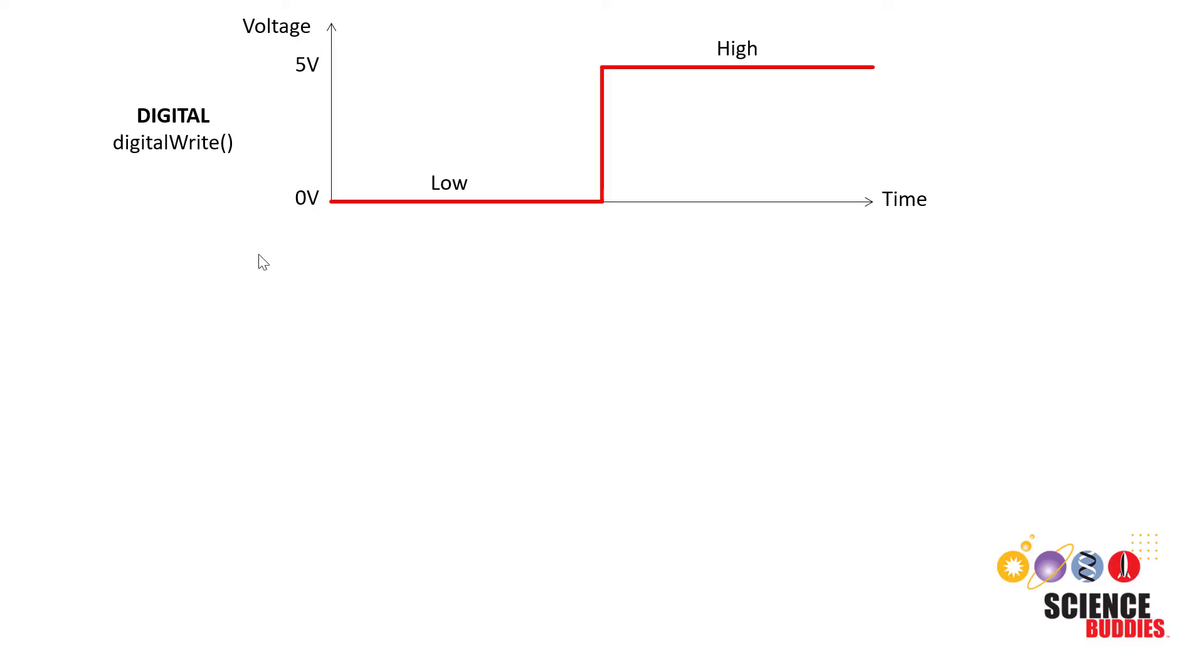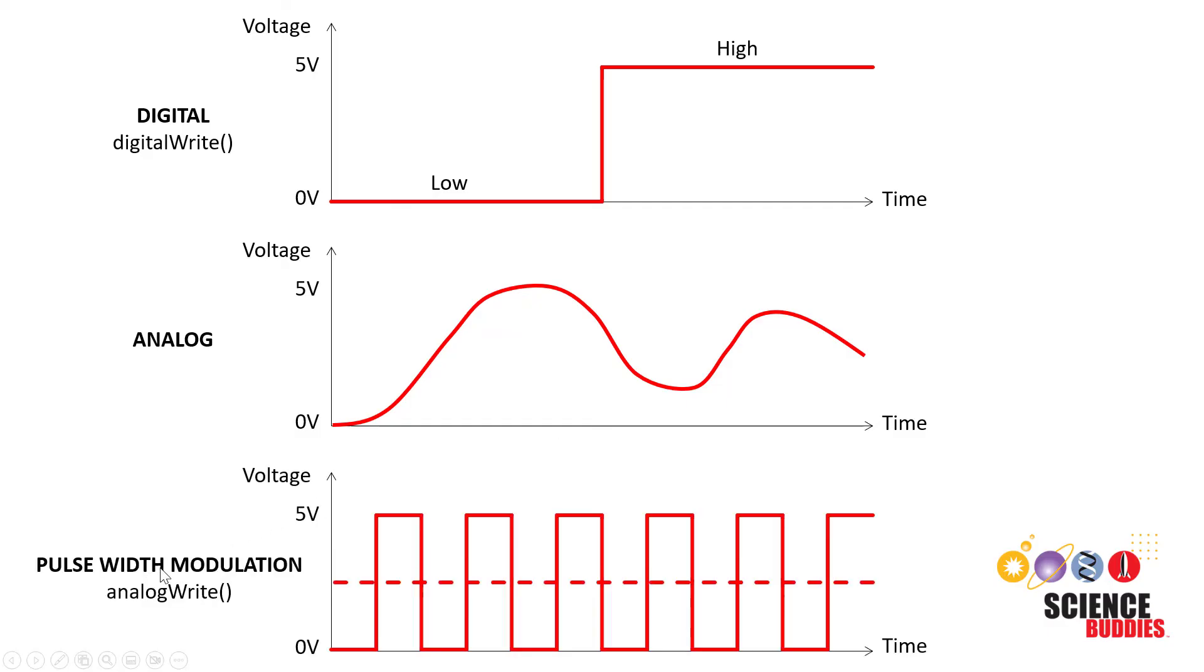We've shown you how to use the analog write command. In this part of the video we're going to explain a little more what it's actually doing and how it works. This allows you to toggle the voltage on one of the output pins between zero volts and five volts or between low and high. But a digital voltage can only be completely low or completely high. It can't be anything in between. For example, you cannot set the output of a digital pin to two and a half volts. To do that you would need an analog voltage. Analog means continuously variable so this voltage can take on any value between zero and five volts. The problem is that the Arduino does not have a true analog output. It cannot generate a voltage that is exactly two and a half volts or any other value between zero and five. It can only generate a true digital output that is either zero or five volts.